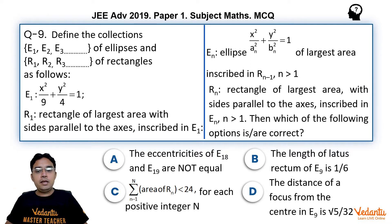Now En is another ellipse which is x²/an² + y²/bn² = 1 of largest area inscribed in rectangle Rn-1 for n > 1. Rn is rectangle of largest area with sides parallel to the axis inscribed in ellipse En for n > 1.